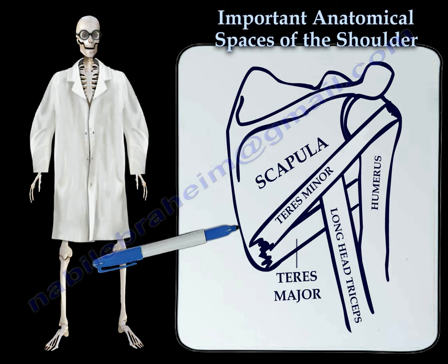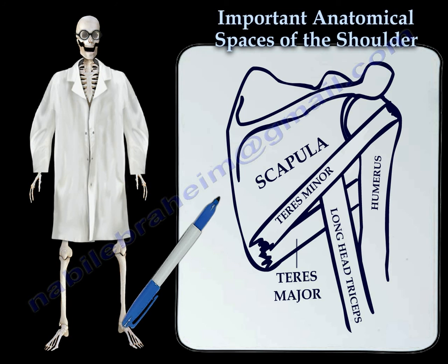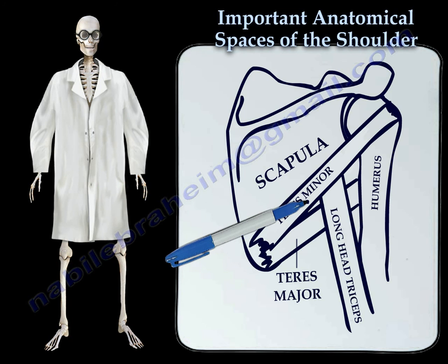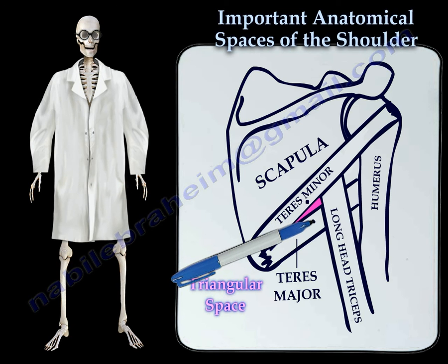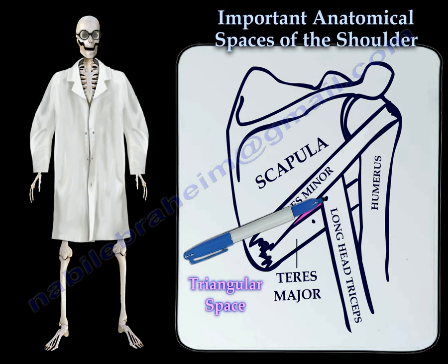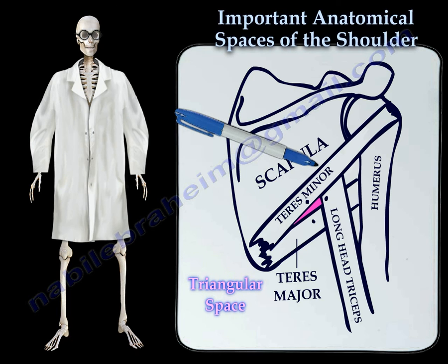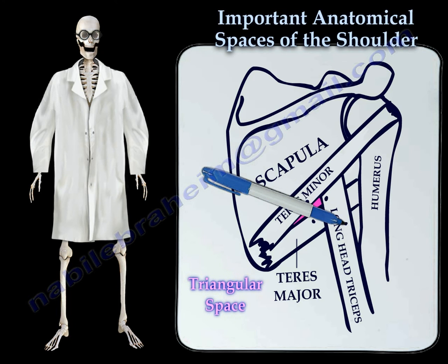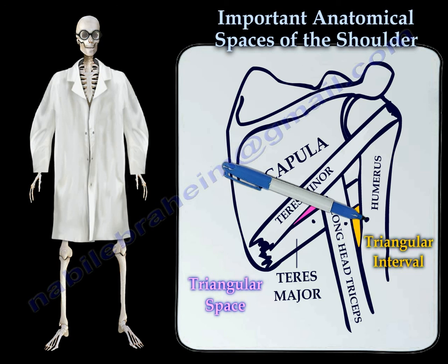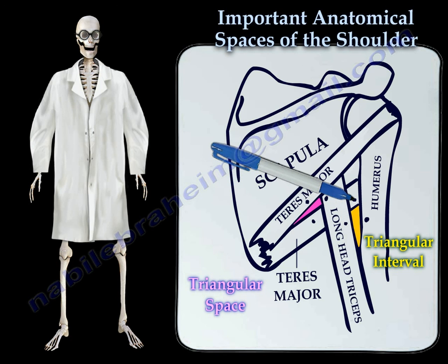The boundaries of the triangular space include the teres minor, the teres major, and the long head of the triceps. The triangular interval has boundaries which include the long head of the triceps, the humeral shaft, and the teres major.